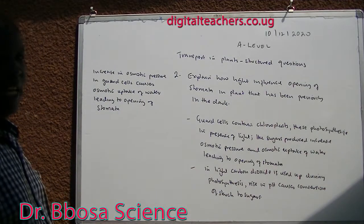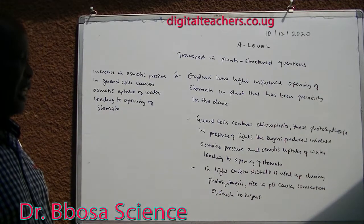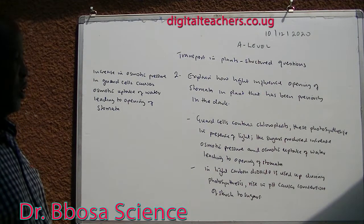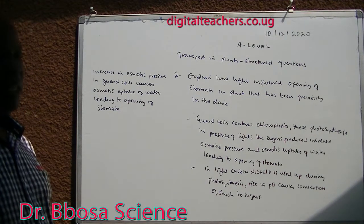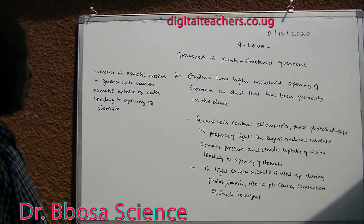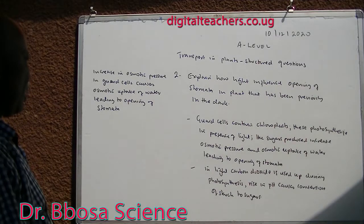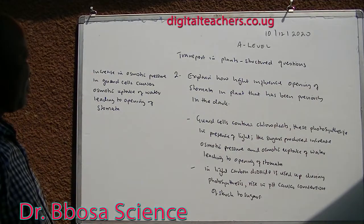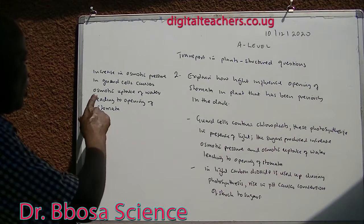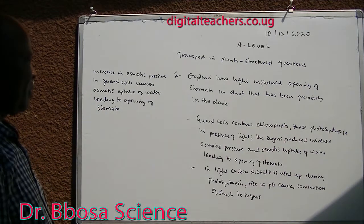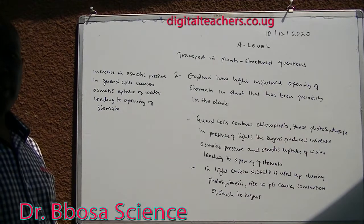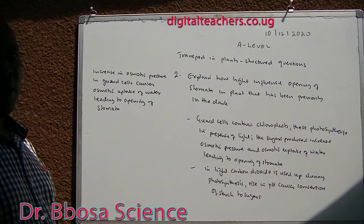Two: in light, carbon dioxide is used during photosynthesis. Rise in pH causes conversion of starch to sugar. The increase in osmotic pressure in the guard cells causes osmotic uptake of water, leading to opening of the stomata.